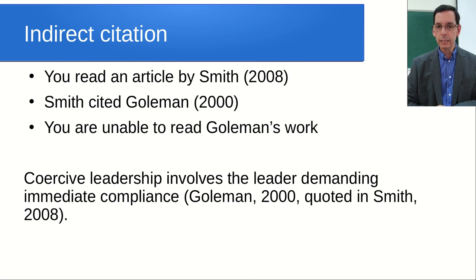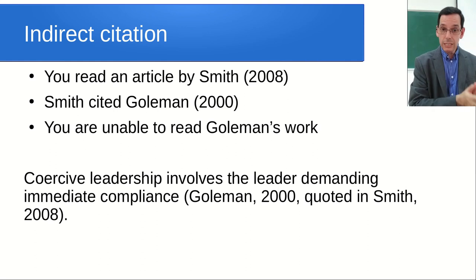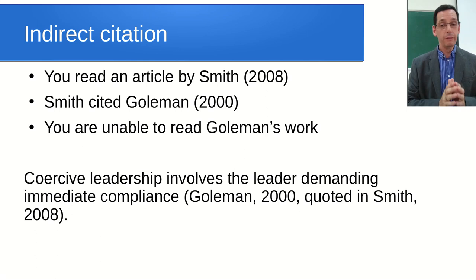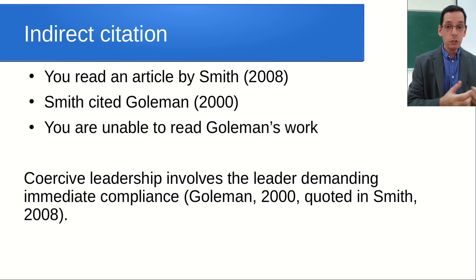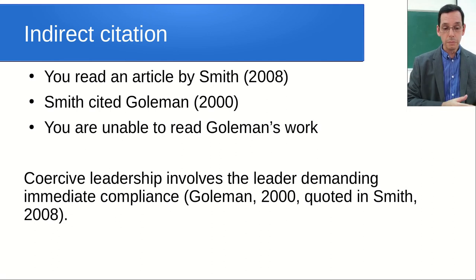There is also indirect citation. Let's say you read a journal article by Smith published in 2008, and in that article Smith references Goleman's work from 2000. You've tried to find Goleman's work and you can't. Because you're unable to read Goleman's work directly, you can write: 'Goleman, 2000, cited in Smith, 2008.' This means the original attribution is Goleman from 2000, but you learned about it through Smith in 2008. Someone can then look up Smith's entry in your references page and find where Smith cited Goleman. Don't be lazy - actually go and read the original work if you can.